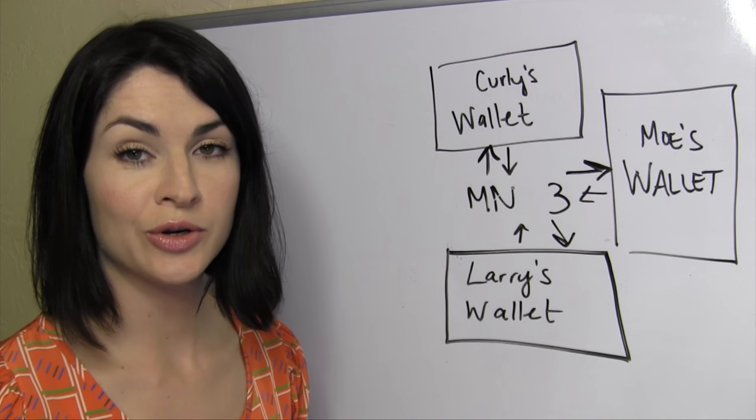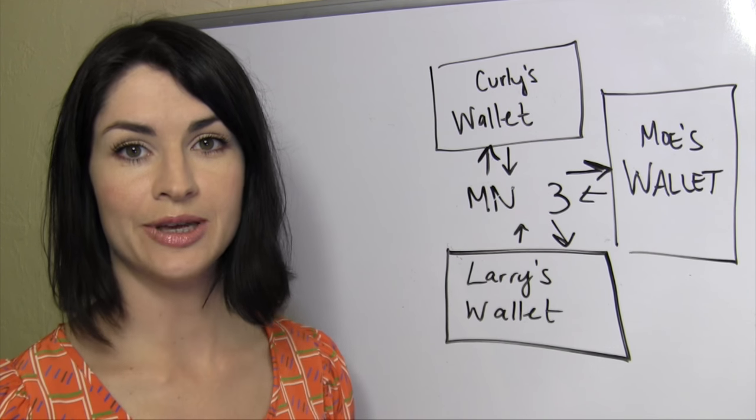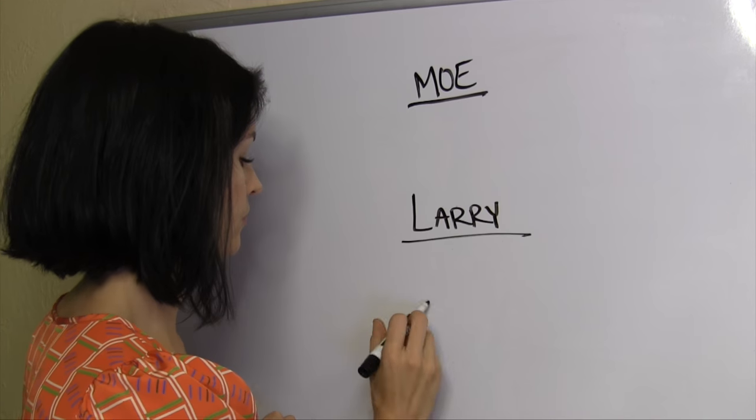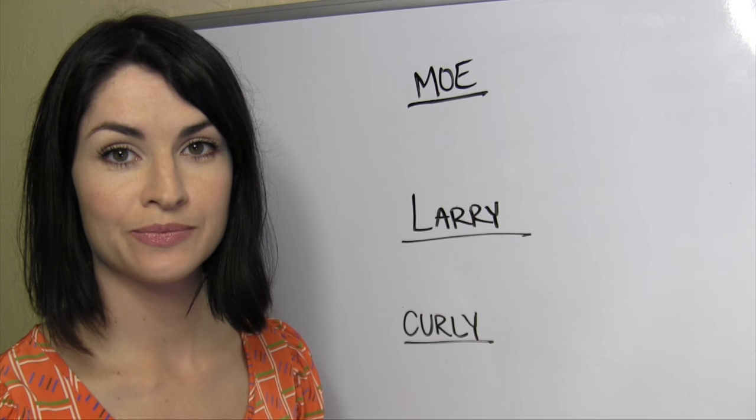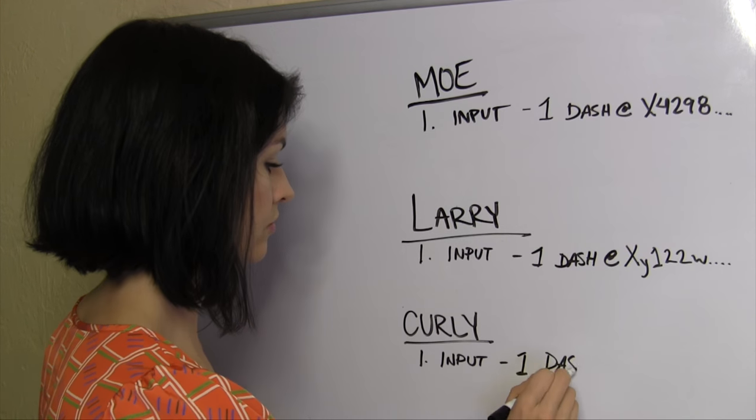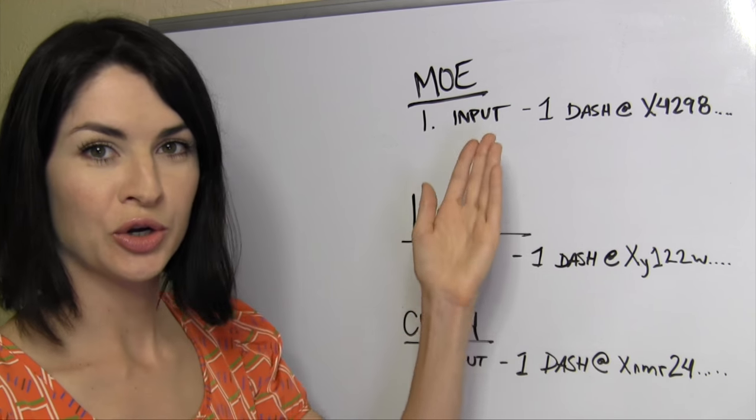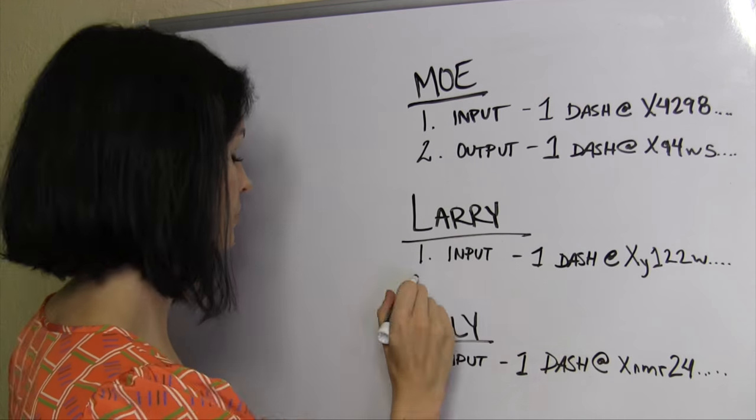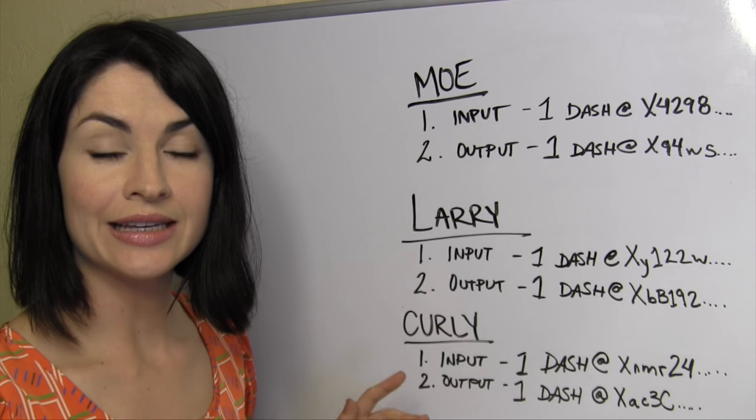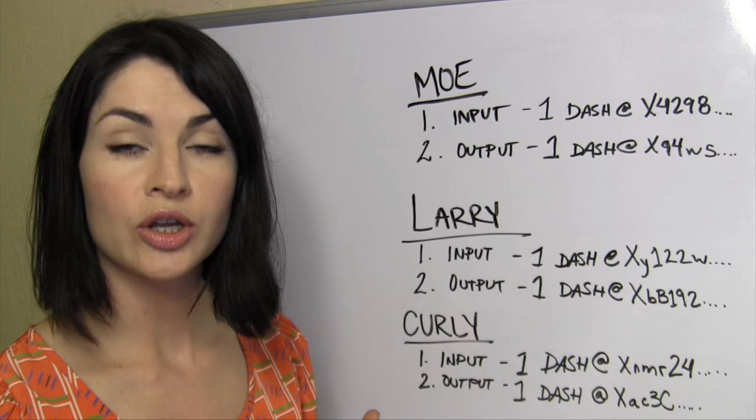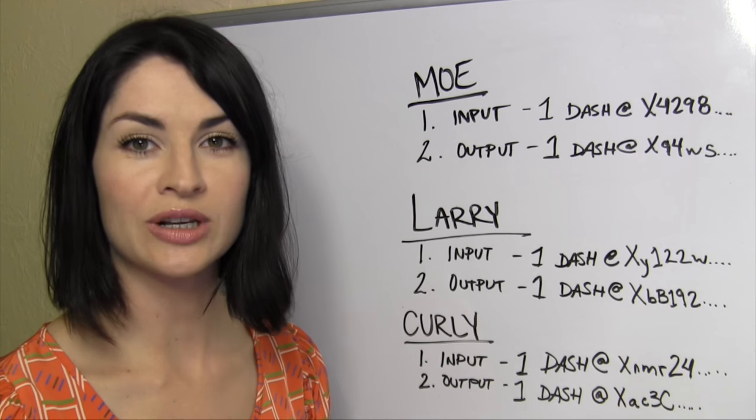To initiate mixing, the masternode then sends each of these three wallets a message that essentially says, ready to mix. At this point, each of the three wallets tells the masternode two pieces of information. Their input, that is, where the one dash they would like to mix currently resides. And secondly, their desired output, that is, which of their own newly generated and empty addresses they would like their one dash to end up in, once this is all said and done.